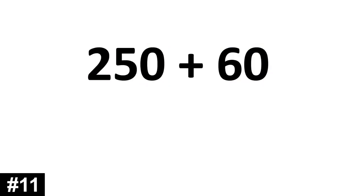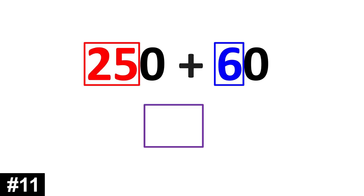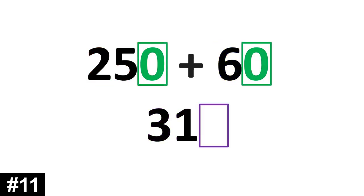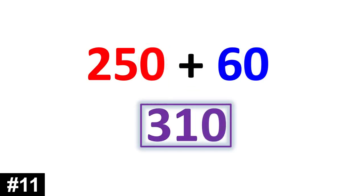250 plus 60. In this case, we have 25 tens plus 6 tens, which gives us 31 tens. We have a 0 for the ones, so we bring down the 0. 310.